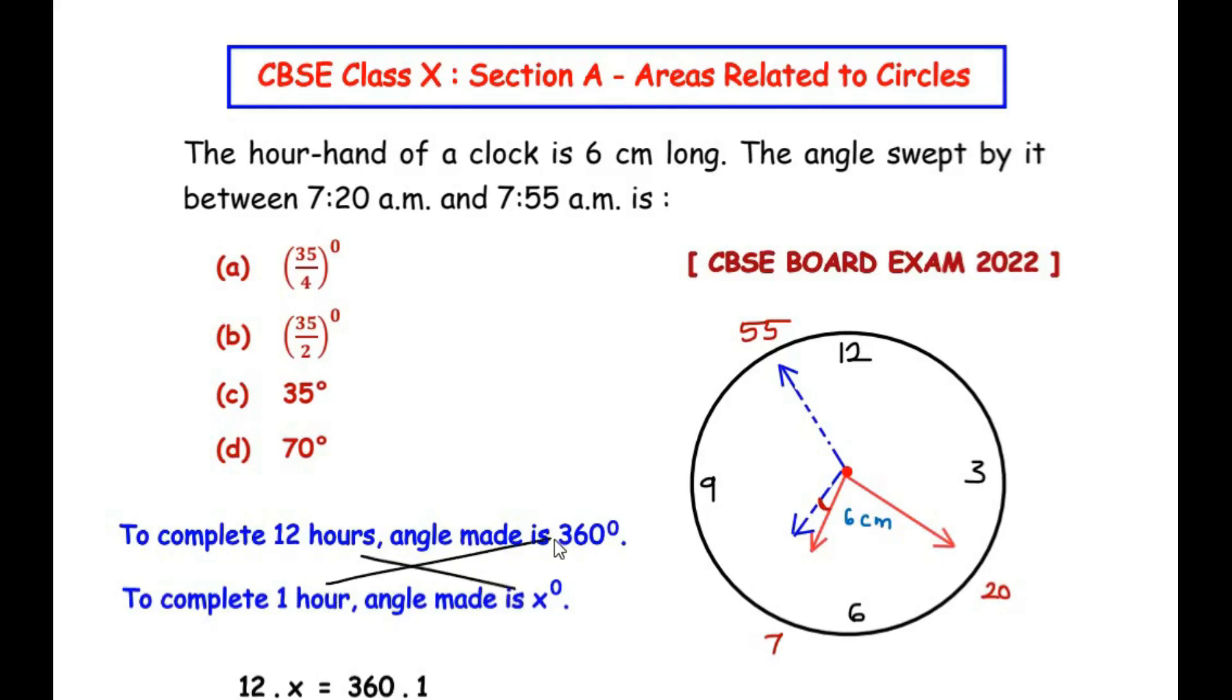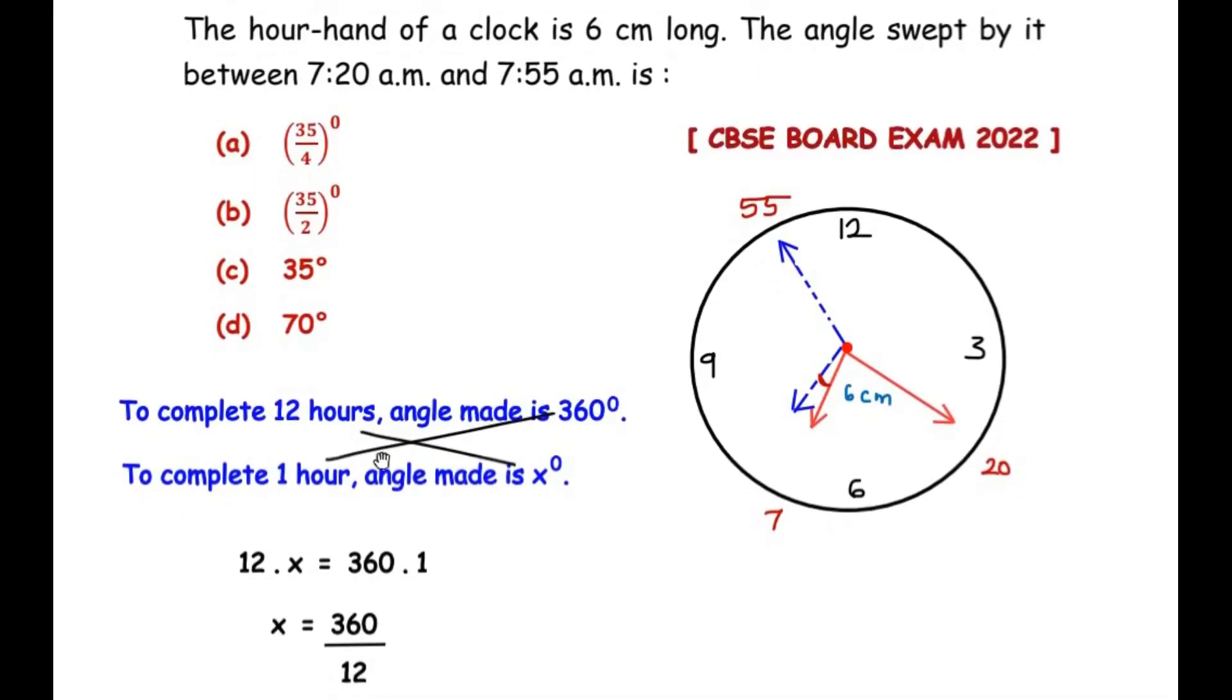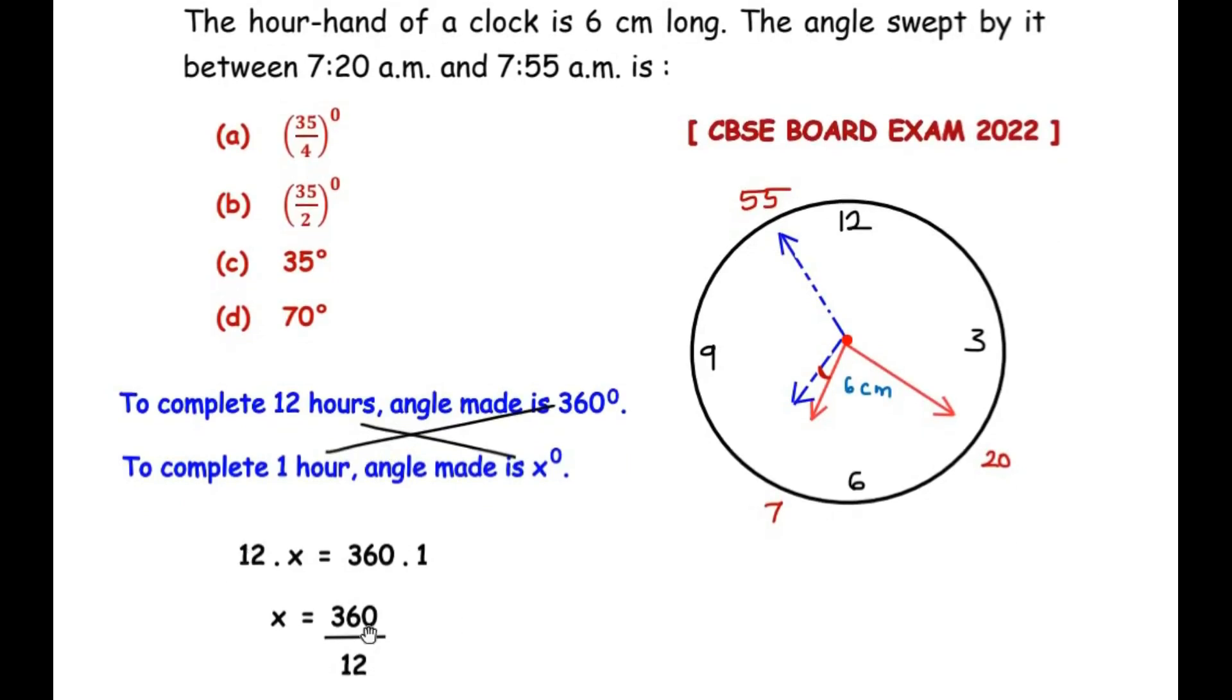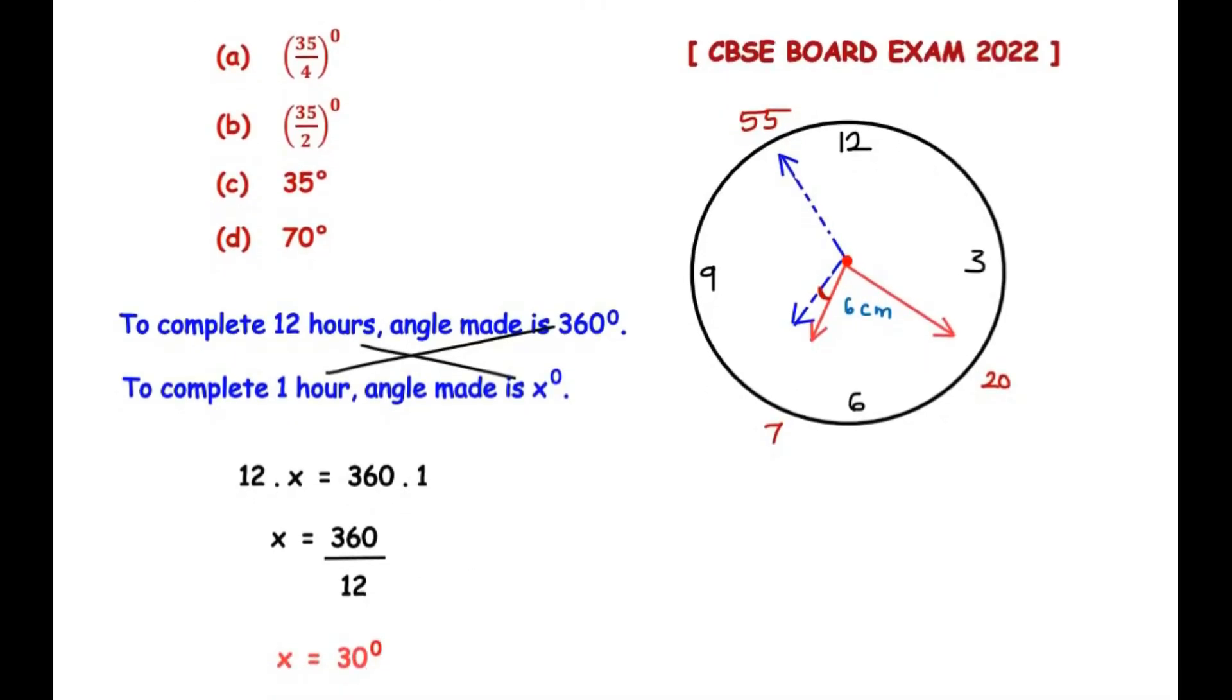Here we have written 12 times x is equal to 360 times 1. Now taking 12 on the other side of the equal sign, we get 360 divided by 12, which is nothing but 30 degrees. This means that the angle made by the hour hand to move from, for example, 7 o'clock to 8 o'clock, it makes 30 degrees.